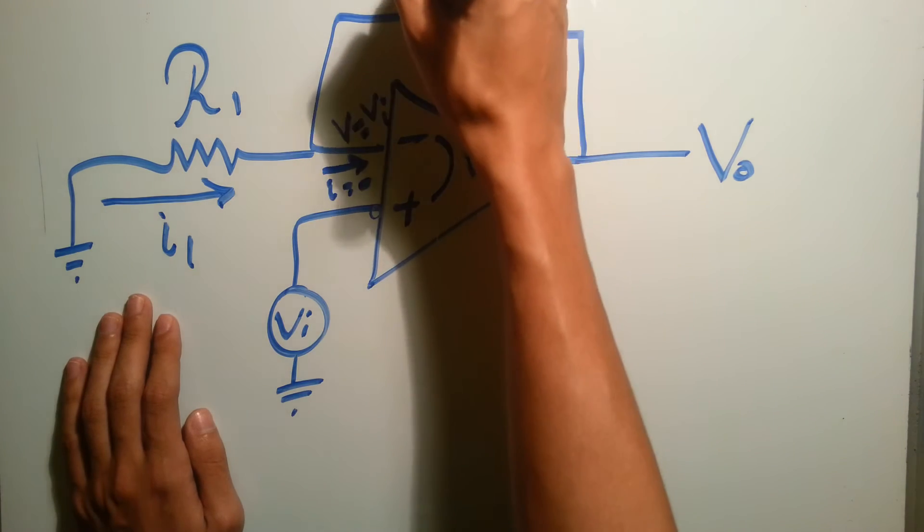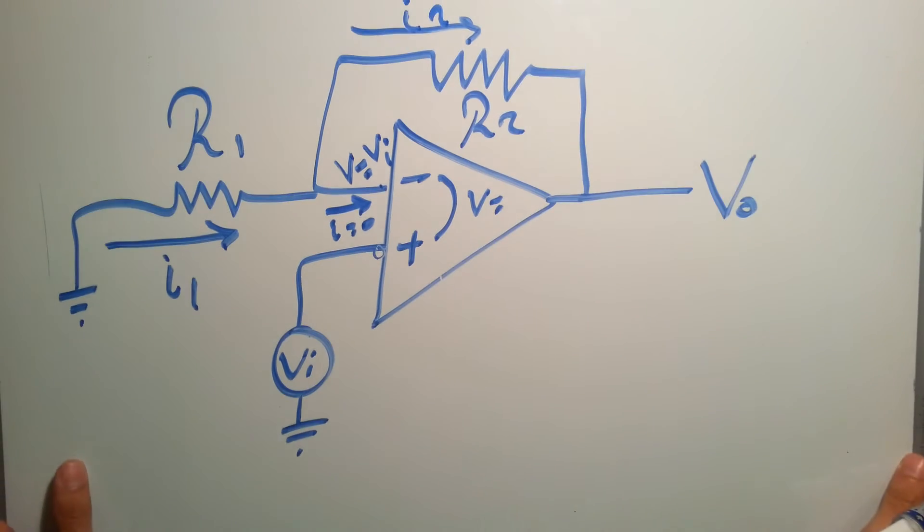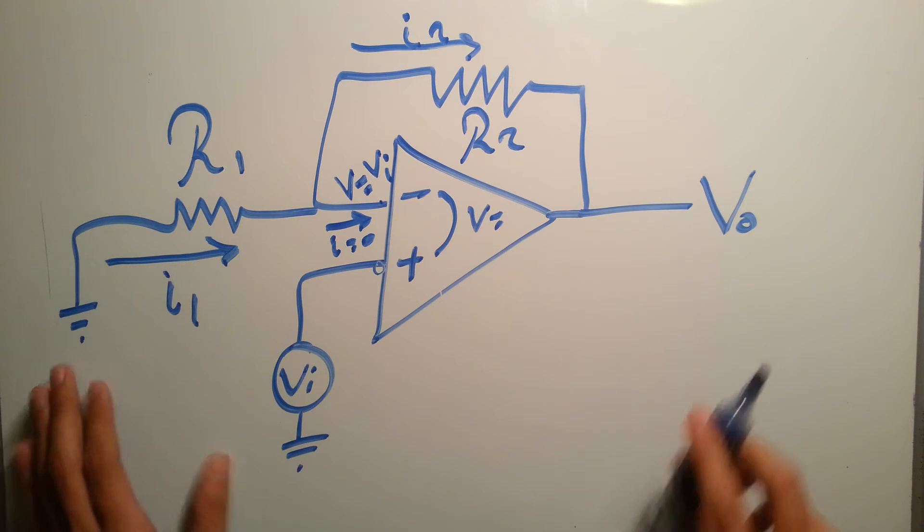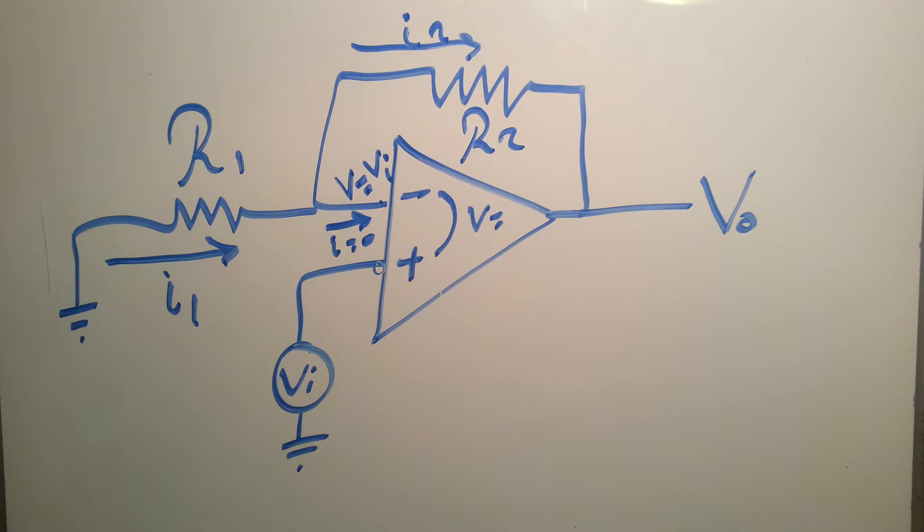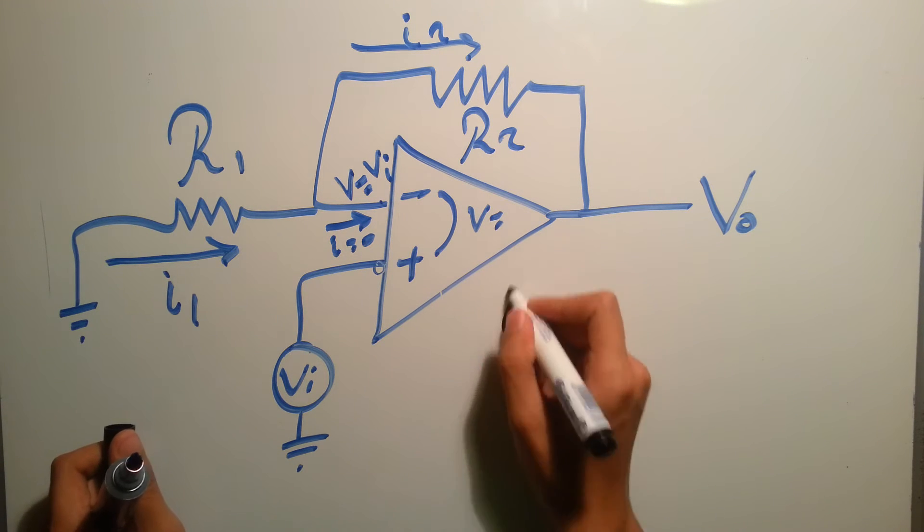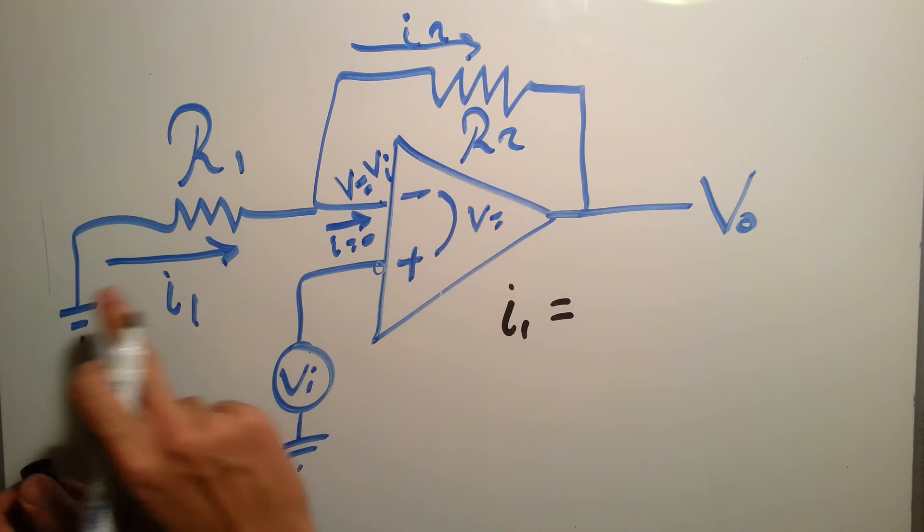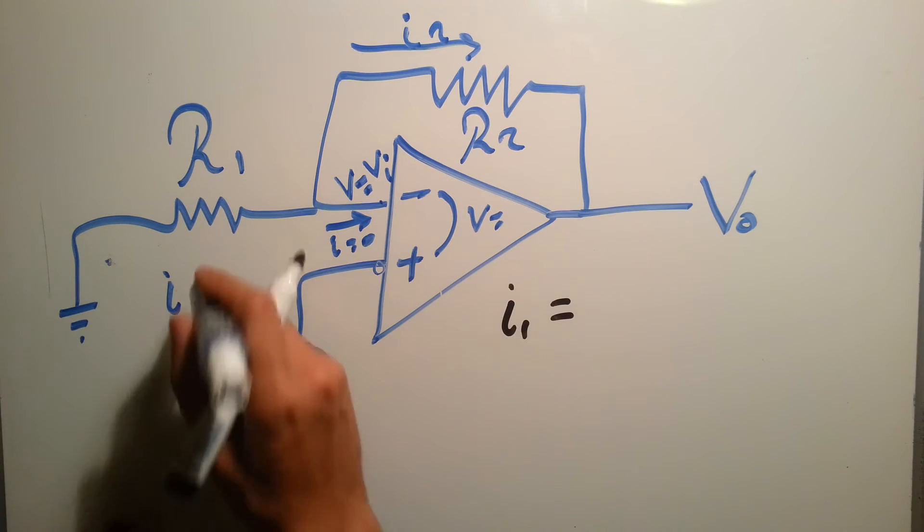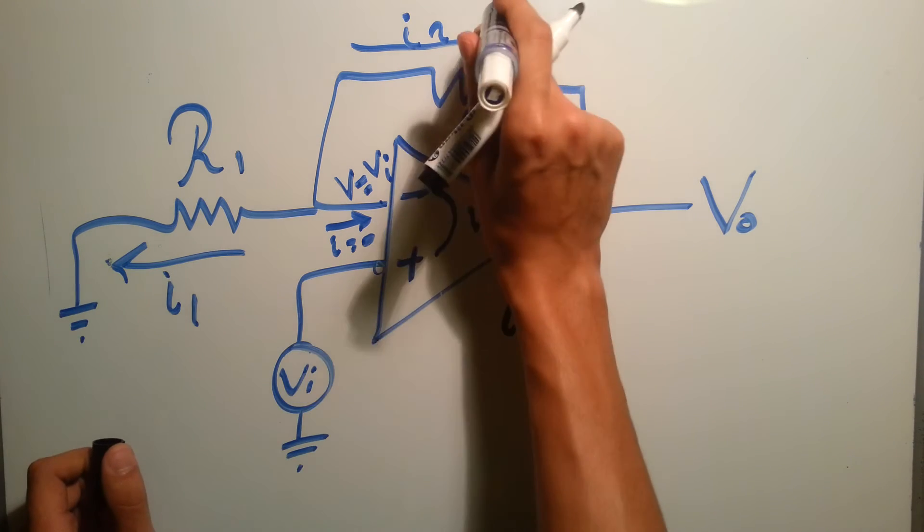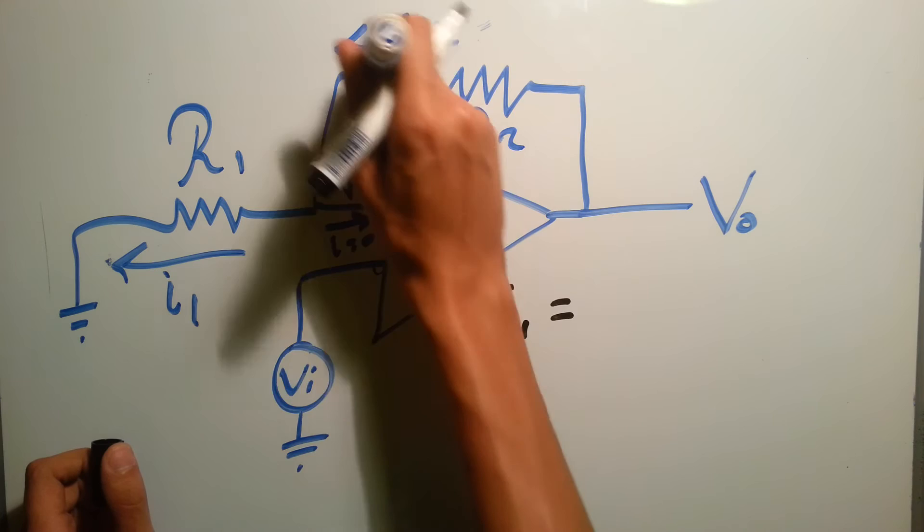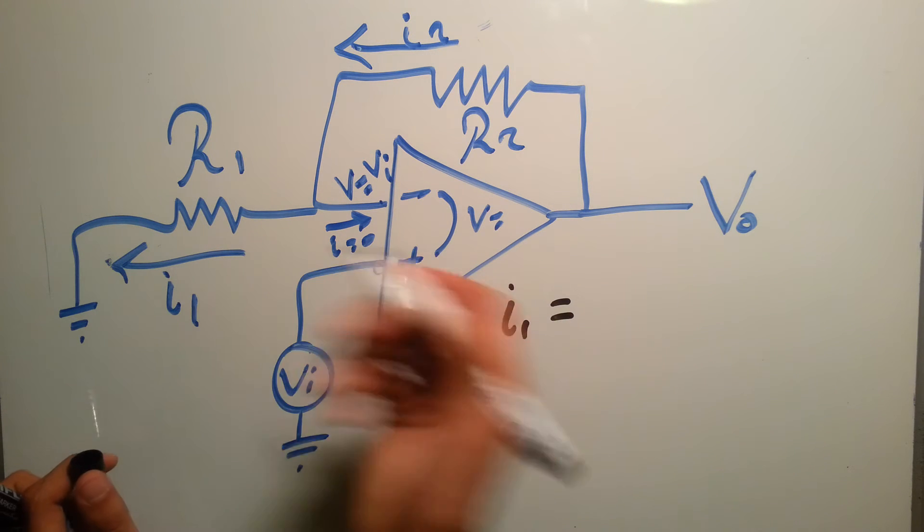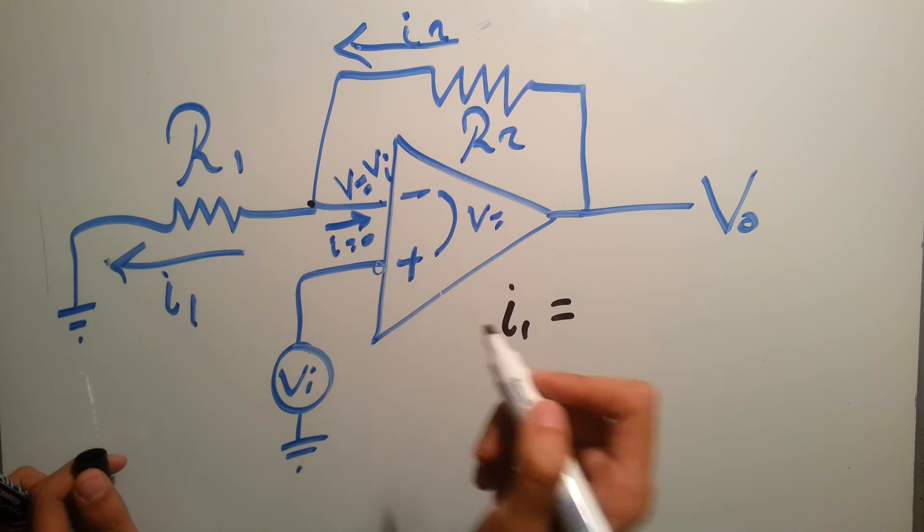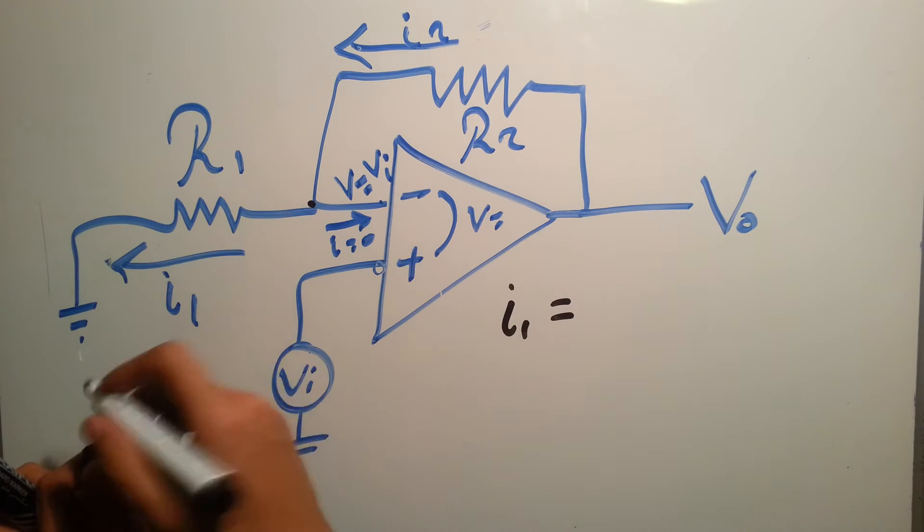What does I1 equal? The current this time will be in the opposite direction, sorry for that. This would be in this direction, I2 will be this direction, or as you like, it's the same. So the current will be VI minus 0, which is VI over R1.